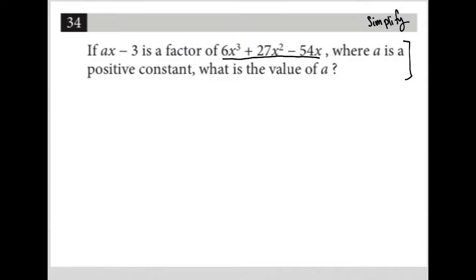So this question says, if ax minus three is a factor of, and I'm going to just write down my expression, 6x cubed plus 27x squared minus 54x, where a is a positive constant, what is the value of a?